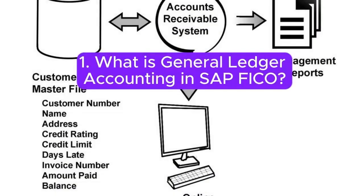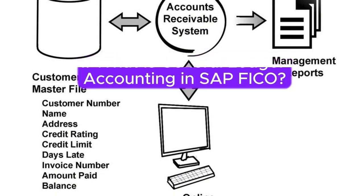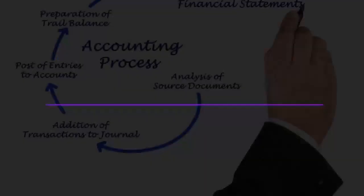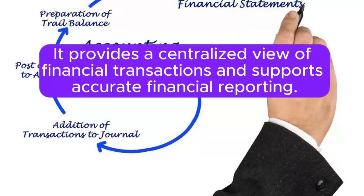Question 1: What is General Ledger Accounting in SAP FICO? Answer: General Ledger Accounting is the core module in SAP FICO that manages the company's financial records. It provides a centralized view of financial transactions and supports accurate financial reporting.